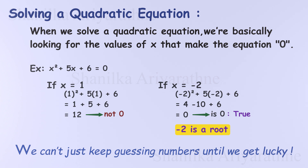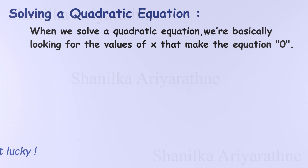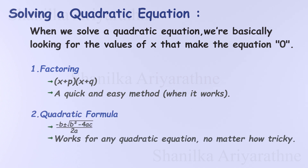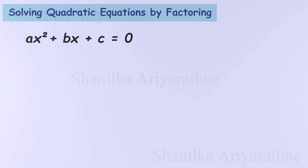Instead of trial and error, we use two foolproof methods: factoring — quick and easy, but effective only when it works — and the quadratic formula, which works every time, even for the trickiest equations. Let's break them down, starting with factoring.